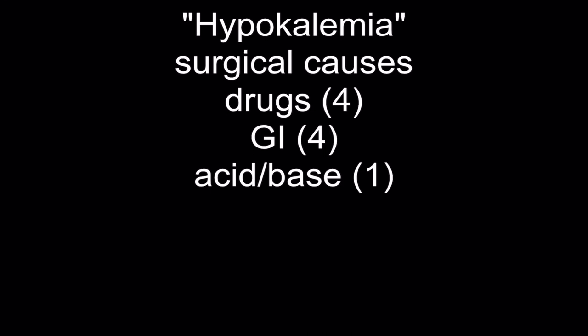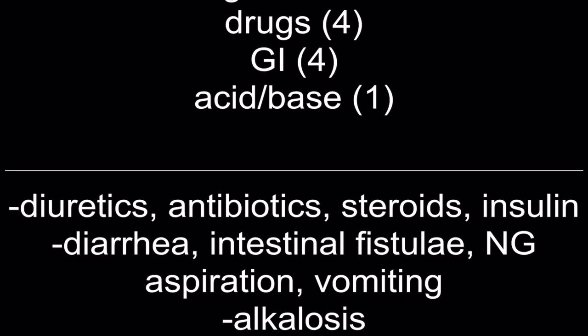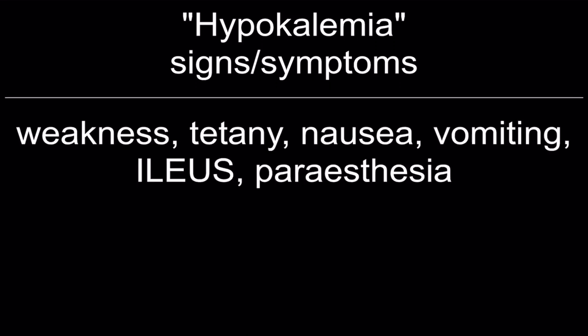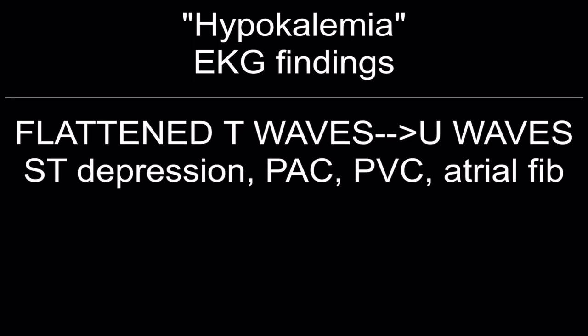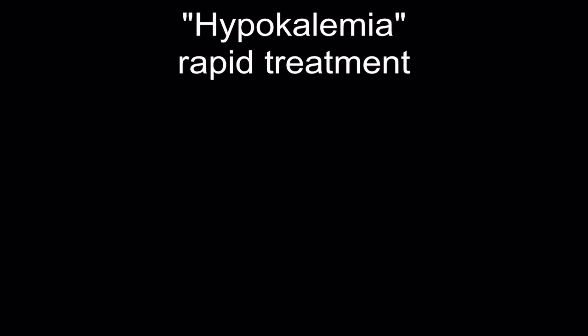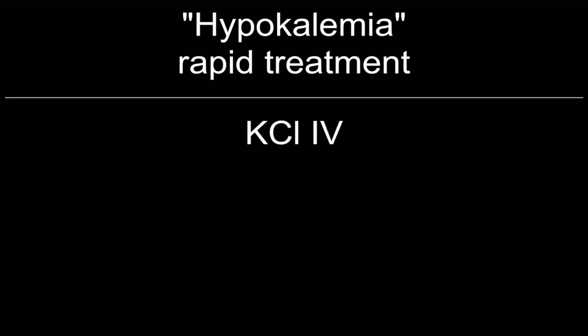Surgical causes of hypokalemia — drugs: diuretics, antibiotics, steroids, insulin. GI causes: diarrhea, intestinal fistula, NG aspiration, vomiting. Acid-base: alkalosis causes hypokalemia. Signs and symptoms: weakness, tetany, nausea, vomiting, ileus, paresthesias. EKG findings: flattened T waves or U waves, ST depression, PACs, PVCs, and atrial fibrillation. Rapid treatment: KCl IV.